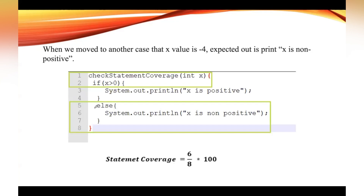Moving to another case where we take the value of x as less than 0 — so taking x as minus 4. Then which statements will be executed? First this one, then as this condition fails we move to the else part and those statements will be executed. Total statements executed: 1, 2, 3, 4, 5, and 6. Substituting into the formula: 6 executable lines divided by total number of lines, multiplied by 100. In this scenario, statement coverage is 75 percent.